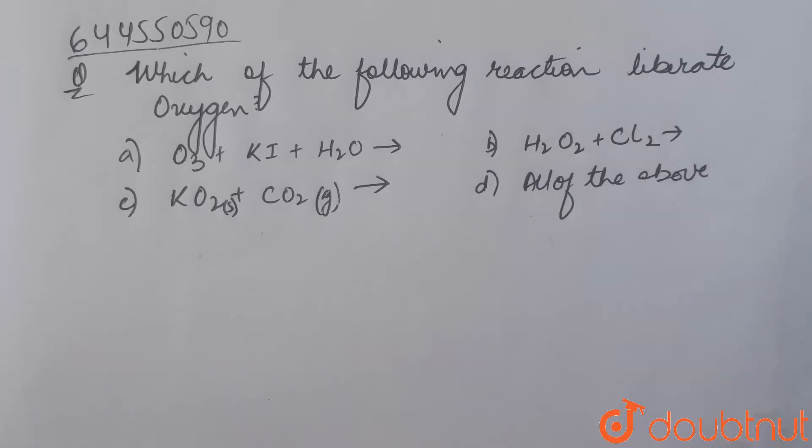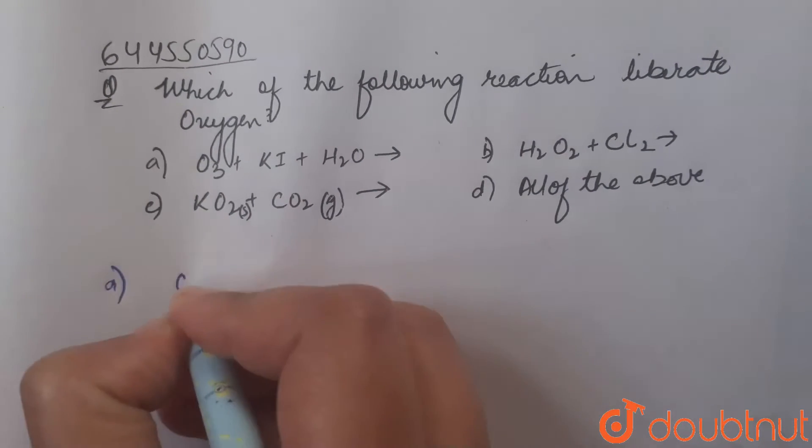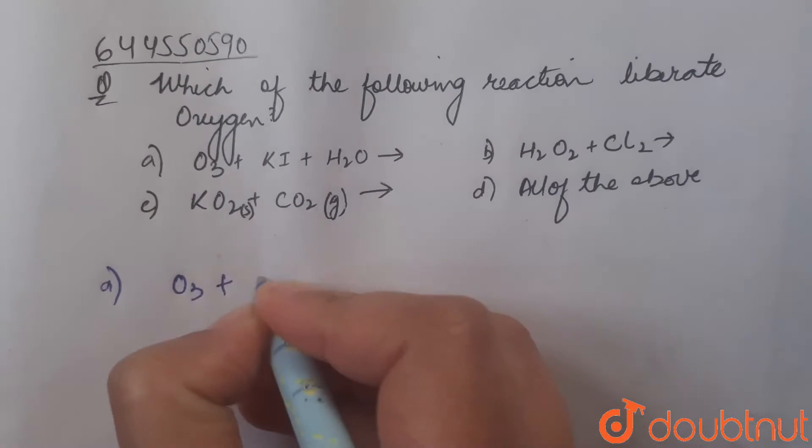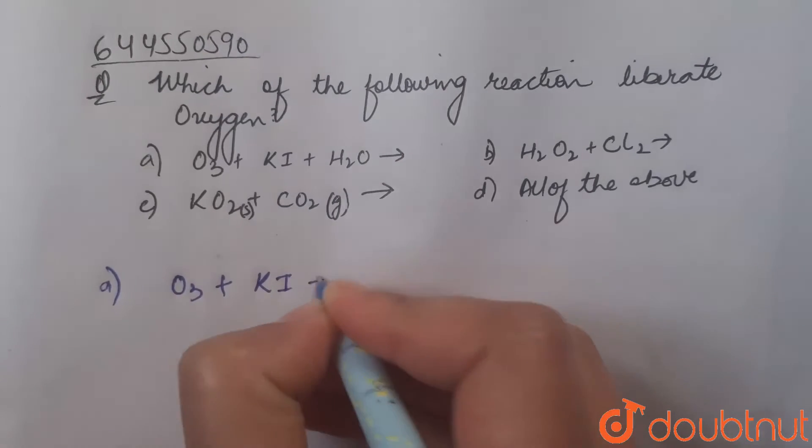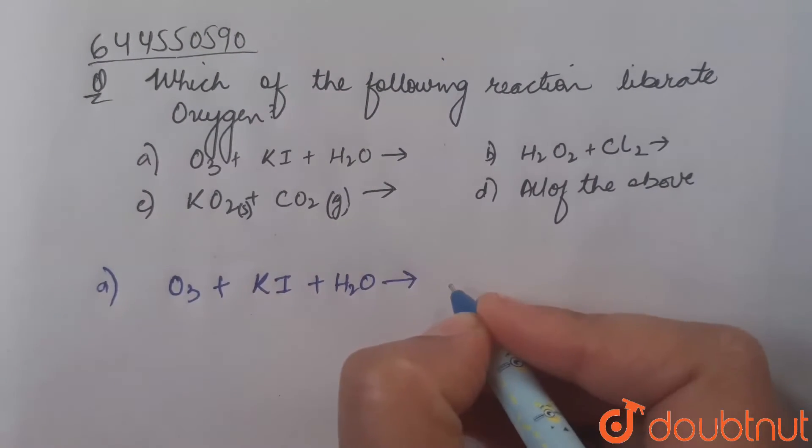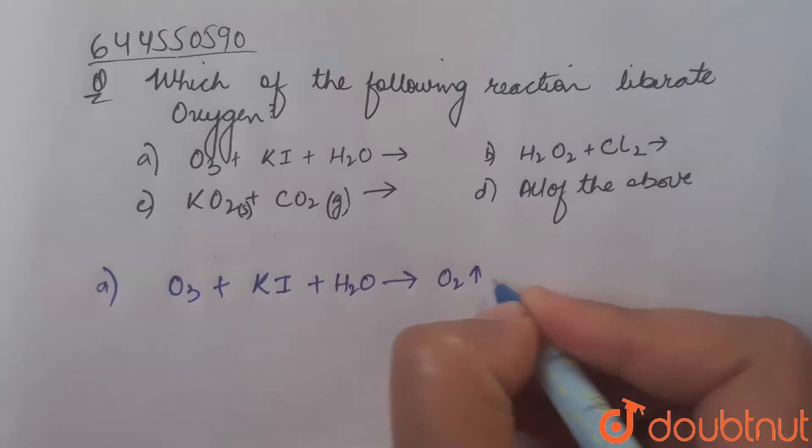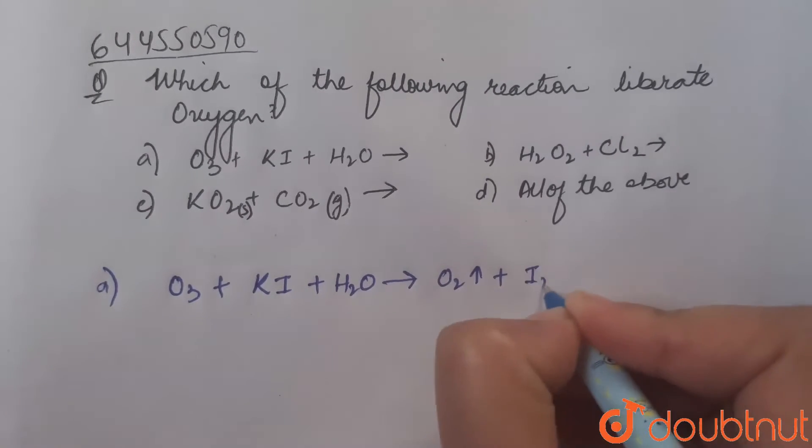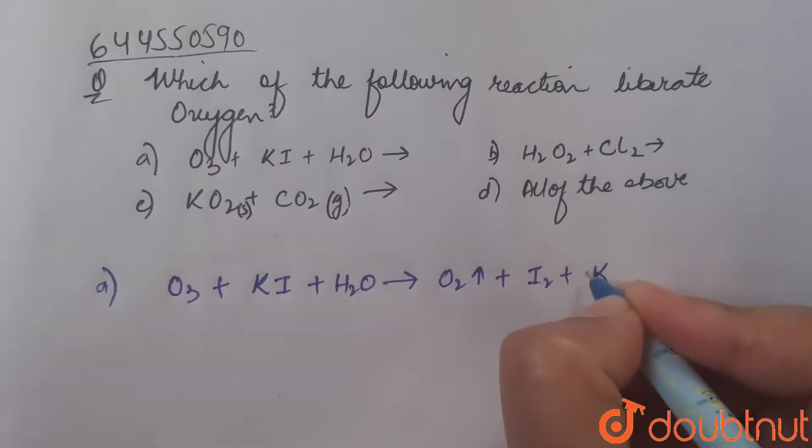The first reaction is ozone O3 reacting with potassium iodide KI and water H2O. When they react, they form oxygen molecules O2, iodine I2, and potassium hydroxide KOH. So in this reaction, oxygen gas is evolving.